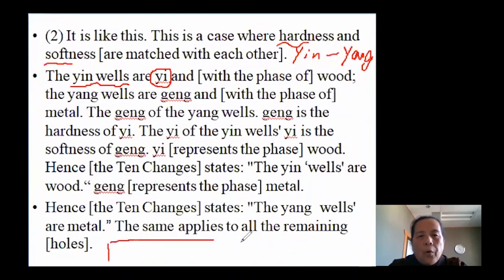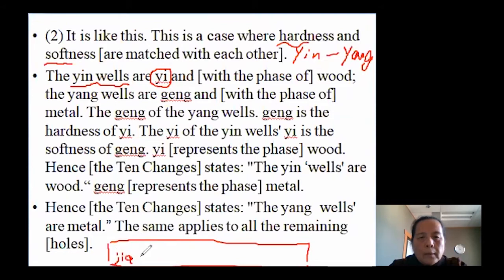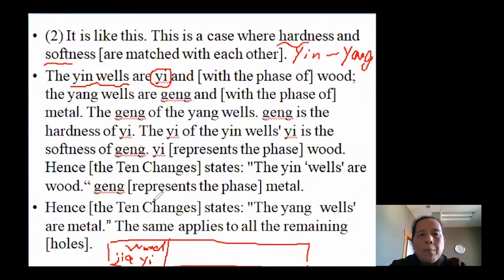In the chart of heavenly stems and their relationship with the five elements: jia-yi are both wood, but jia is yang wood and yi is yin wood. So yi has a relationship with wood as its yin expression. We have a picture showing this.